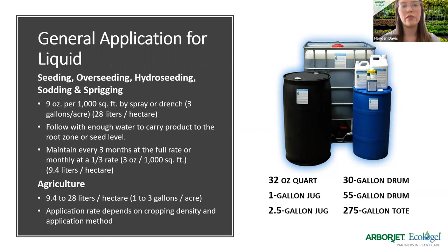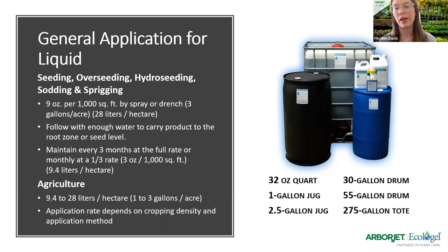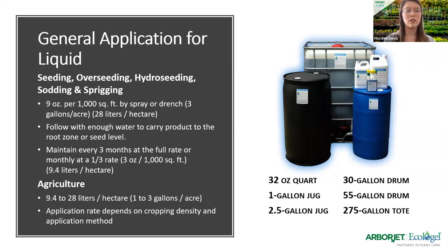For the liquid formulation — for seeding, overseeding, hydroseeding, and all that — nine ounces will give you 1,000 square feet by spray or drench. The main thing is that you want the product to reach the root system, which is why with the liquid you have to water it in right away to get the best results. Maintain every three months at full rate, as one application lasts up to 90 days. Follow with enough water to carry the product to the root zone. For agriculture, the rate is 9.4 to 28 liters per hectare or one to three gallons per acre, depending on crop density. The product is available in all these sizes, and we even have a ready-to-use hose end sprayer on top of the blue tub — great for homeowners.